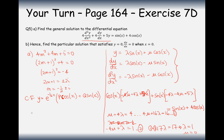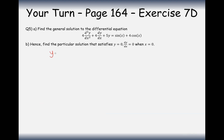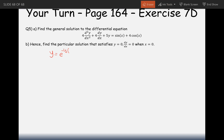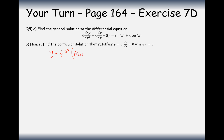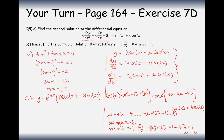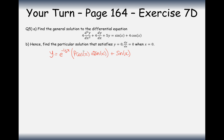So from the previous working, lambda equals 1 and mu equals 0. Going back to the suggested form, lambda is in front of sine, so the particular integral is just sine(x). The full general solution is the complementary function plus sine(x): y equals e to the minus half x times (p·cos(x) plus q·sine(x)) plus sine(x). Now we can work out what p and q are.